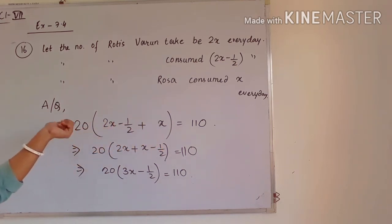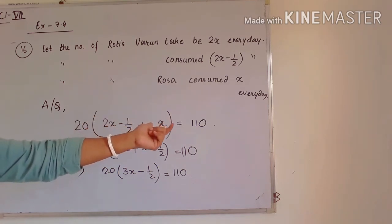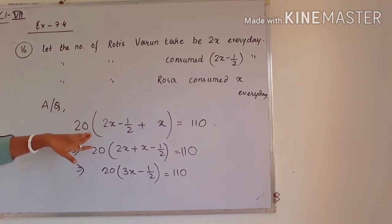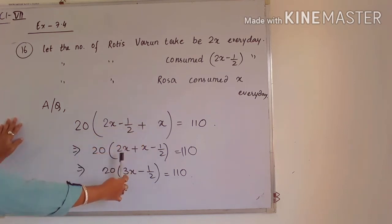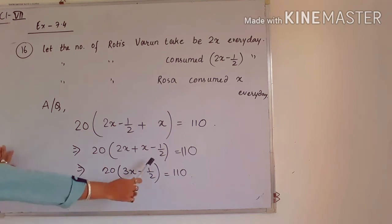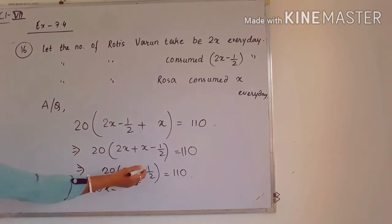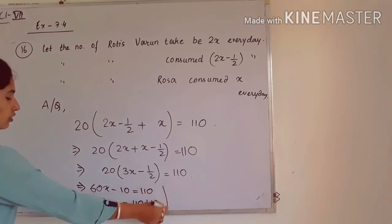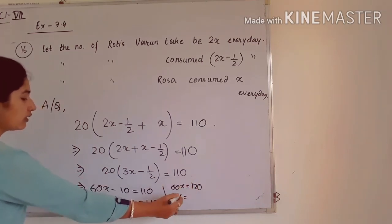We multiply with 20, and it will be equal to 110, the total number of rotis for 20 days. Inside the bracket, we collect like terms: 2x plus x gives 3x minus 1 by 2. After multiplying by 20, we get 60x minus 10 is equal to 110. So 60x equals 120, meaning x equals 120 by 60, which is 2.